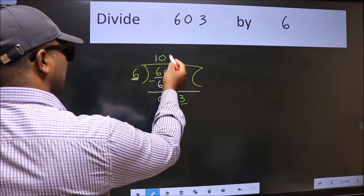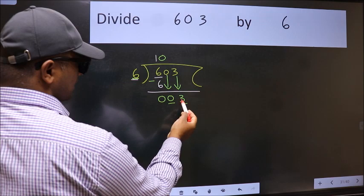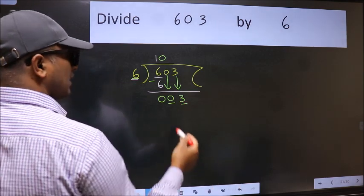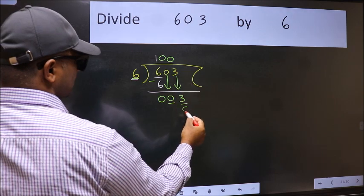If I take 1, we will get 6, but 6 is larger than 3. So what we do is we take zero. So 6 into zero is zero.